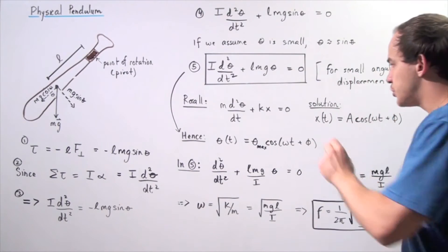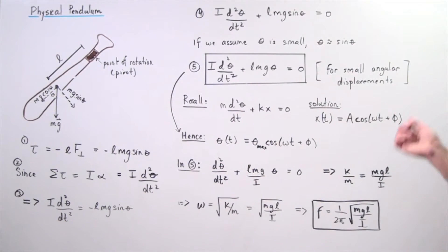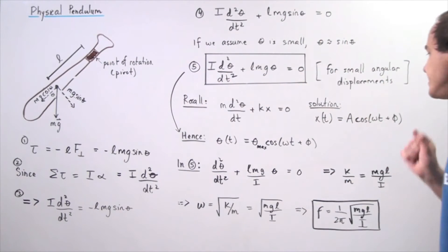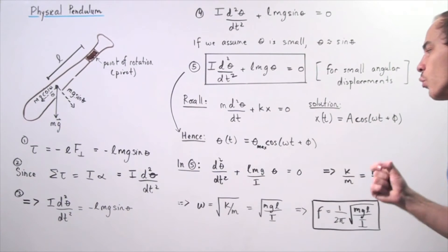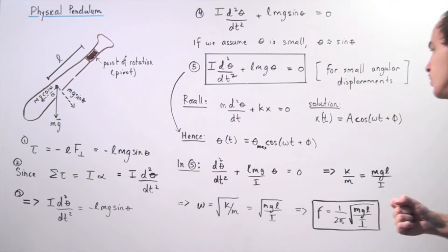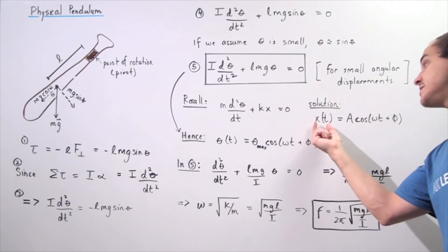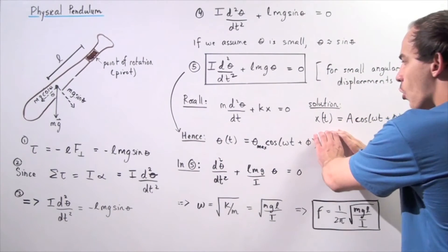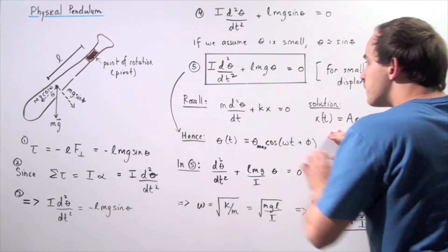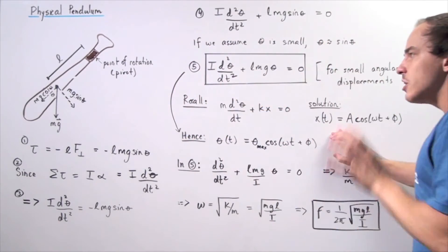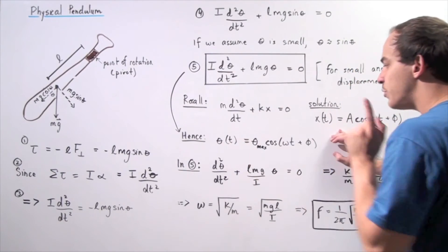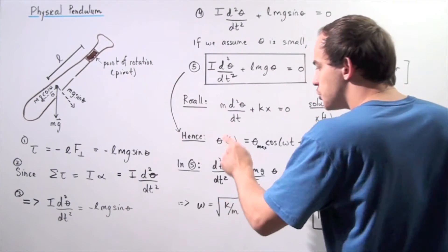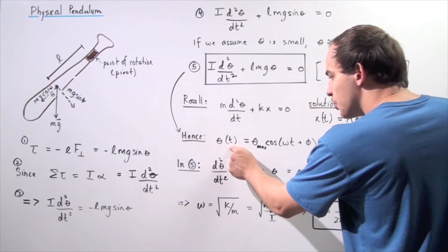Recall the general solution to the SHM equation. For the physical pendulum's differential equation, we simply replace the maximum displacement with the maximum angular displacement, and replace the displacement function with the angular position function with respect to time. Therefore, if we know the maximum angle, the phase angle, and the angular frequency, we can calculate the angular position of the pendulum at any given time.